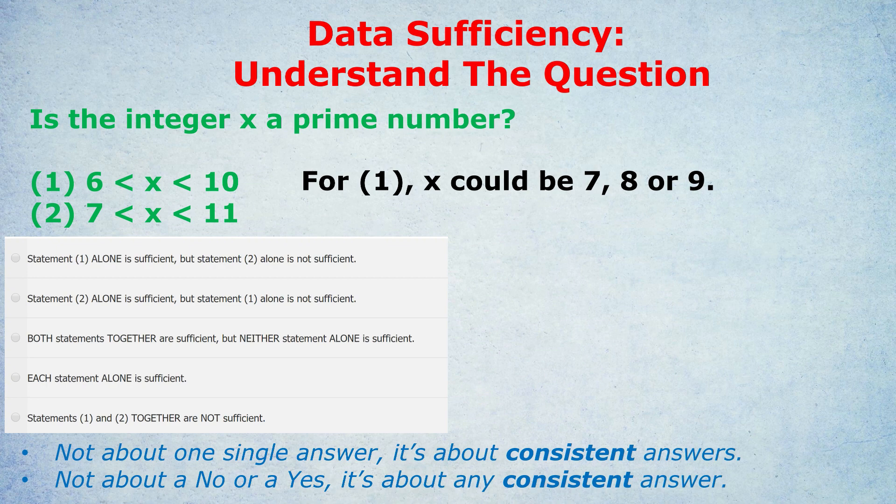Just because there are three different options doesn't mean it's insufficient. If all of those three options or values were giving us a consistent answer to the question, is x a prime number, it would be sufficient. Unfortunately, they are not giving consistent answers. If x was 7, then it would be a prime number. But if x was 8 or 9, it wouldn't be a prime number.